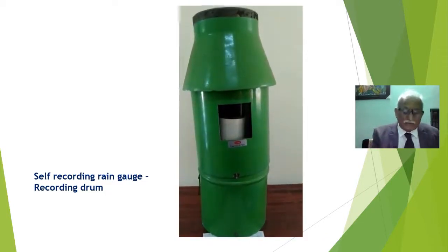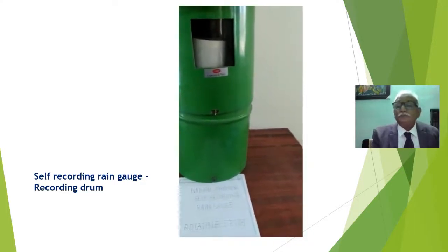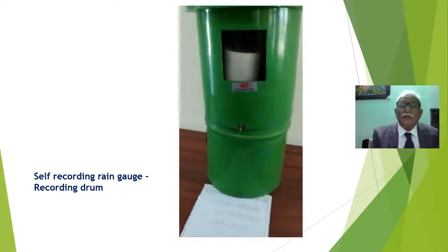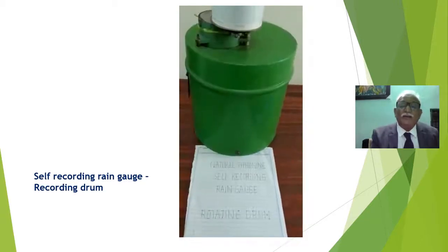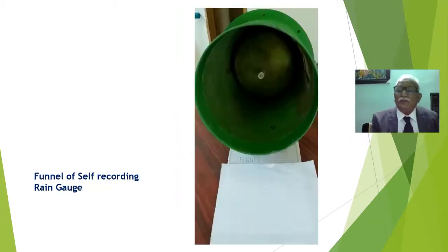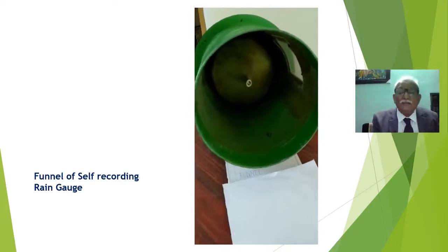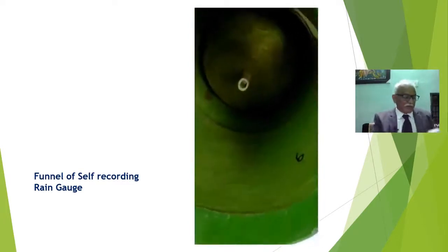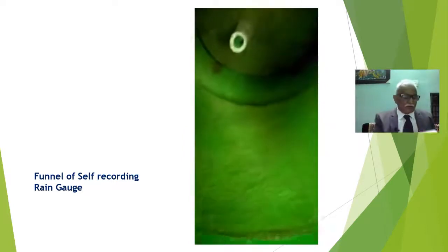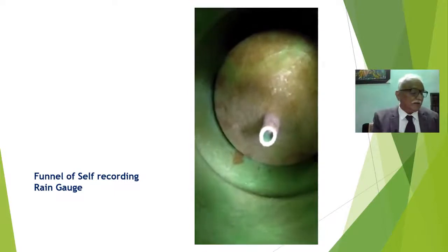This is how the self-recording rain gauge looks. Here you are viewing the self-recording rain gauge including the recording drum. This is how the self-recording rain gauge at the laboratory level is kept for identification. When you go for your examinations, please note that the funnel of the self-recording rain gauge is also an important identification item to score very good marks.